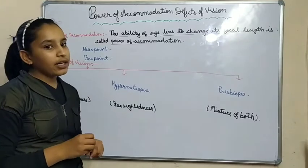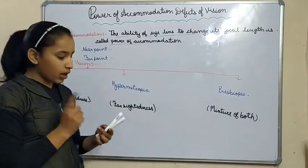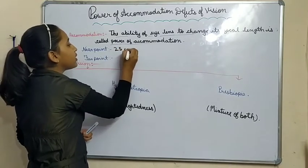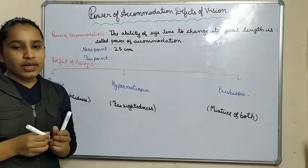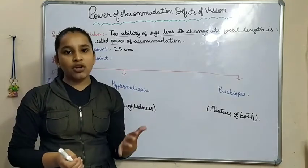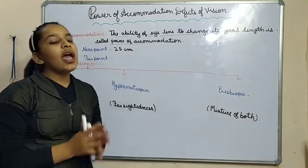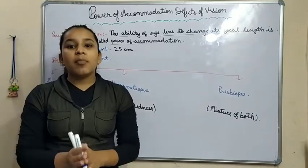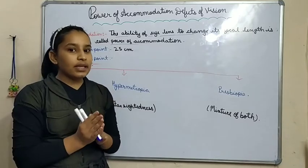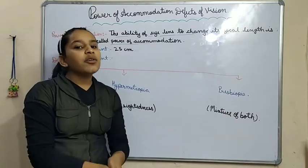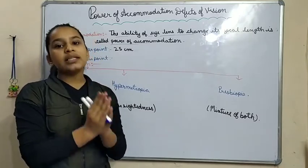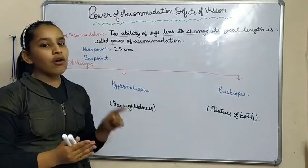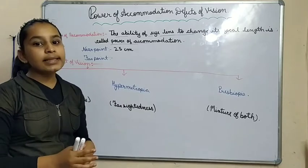The near point of a normal human eye is about 25 cm, so we can see any object clearly from a distance of 25 cm. And the far point of the human eye is infinity, because we can see stars which are millions and billions of km away from us. So the far point of a normal human eye is infinity.